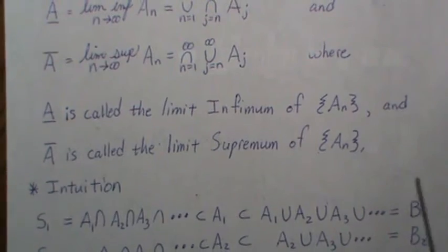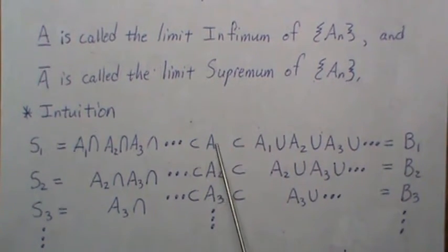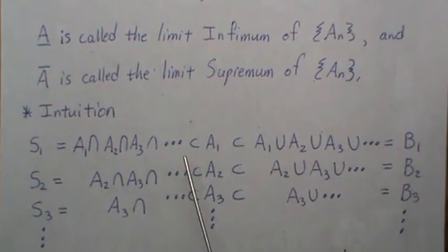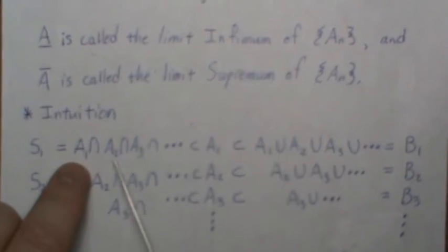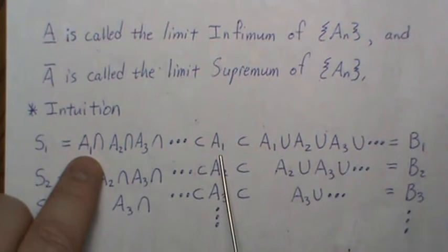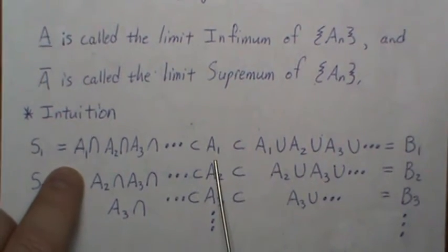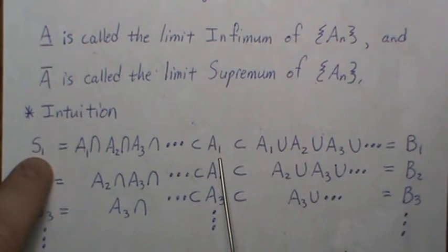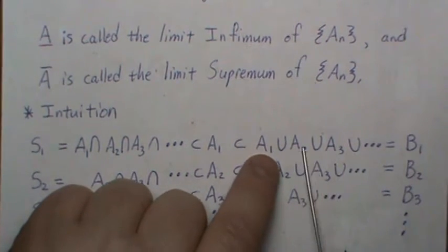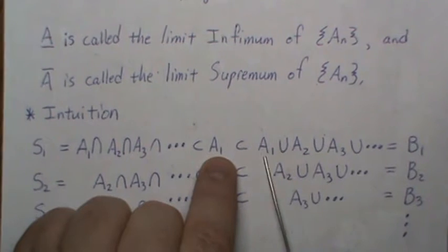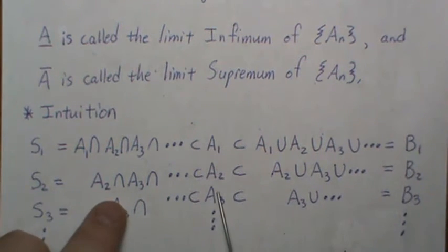We have a sequence of sets A_n — so A_1, A_2, A_3, etc. We'll look left and right of each set. Looking left: if we take the intersection of A_1, A_2, A_3 all the way to infinity, this is smaller than A_1, because intersecting can only make it smaller. So this set is a subset of A_1; we'll call it S_1. Looking right: if we union A_1, A_2, A_3 all the way to infinity, it can only be bigger than A_1, so A_1 is a subset of this, which we call B_1.